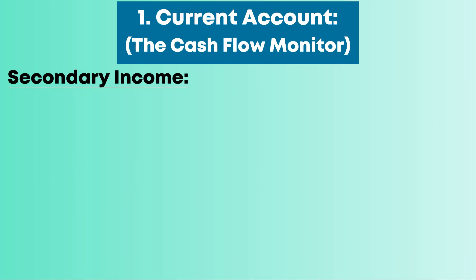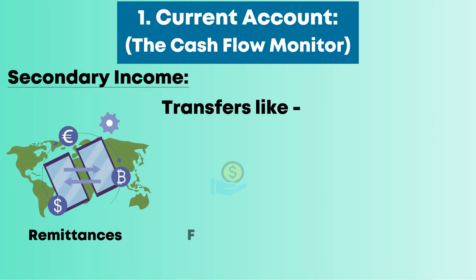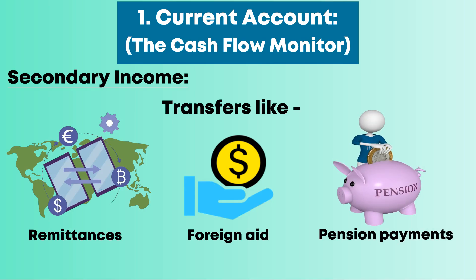Secondary income covers transfers like remittances, foreign aid, and pension payments.